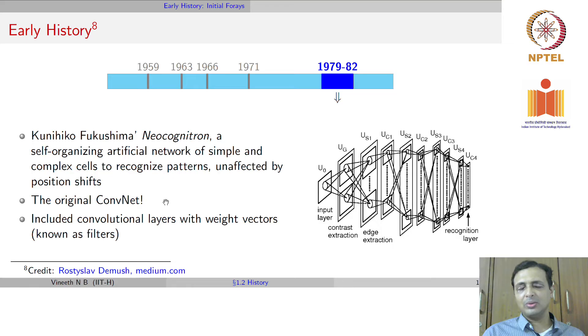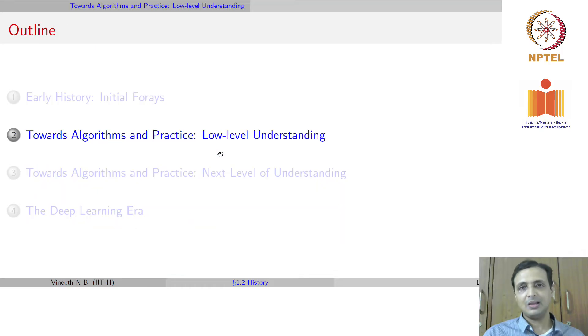In the same period around 1980-81, there was also a significant development by Kunihiko Fukushima called the neocognitron, which is the precursor of convolutional neural networks we see today. It was a significant development. Fukushima introduced a self-organizing artificial network of simple and complex cells to recognize patterns. You can call this the original CNN. It talked about convolutional layers with weight vectors which are also called filters today. That was one of the earliest versions of convolutional neural networks.